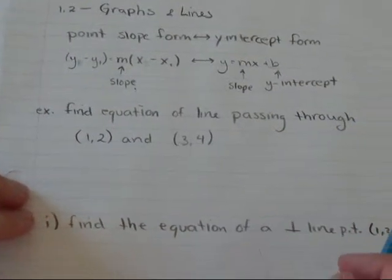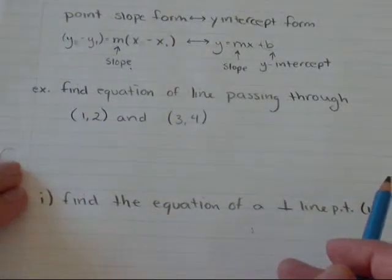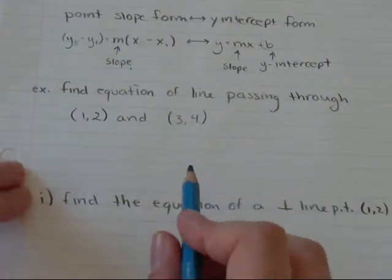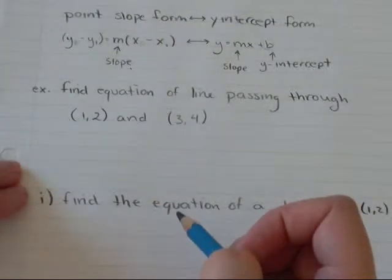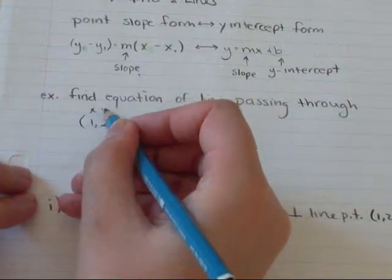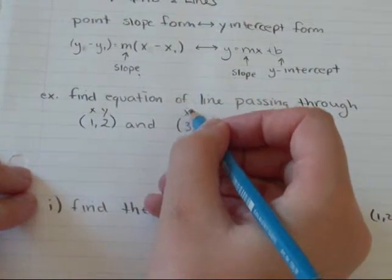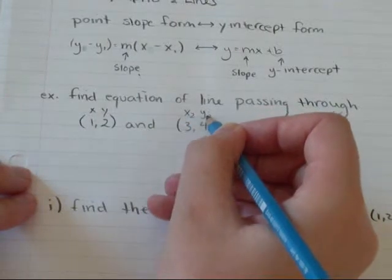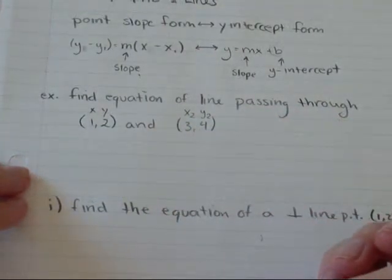I'm going to do an example. Find the equation of the line passing through the points 1, 2, and 3, 4. So, remember these are written as xy. And I'm going to make this x2, y2.